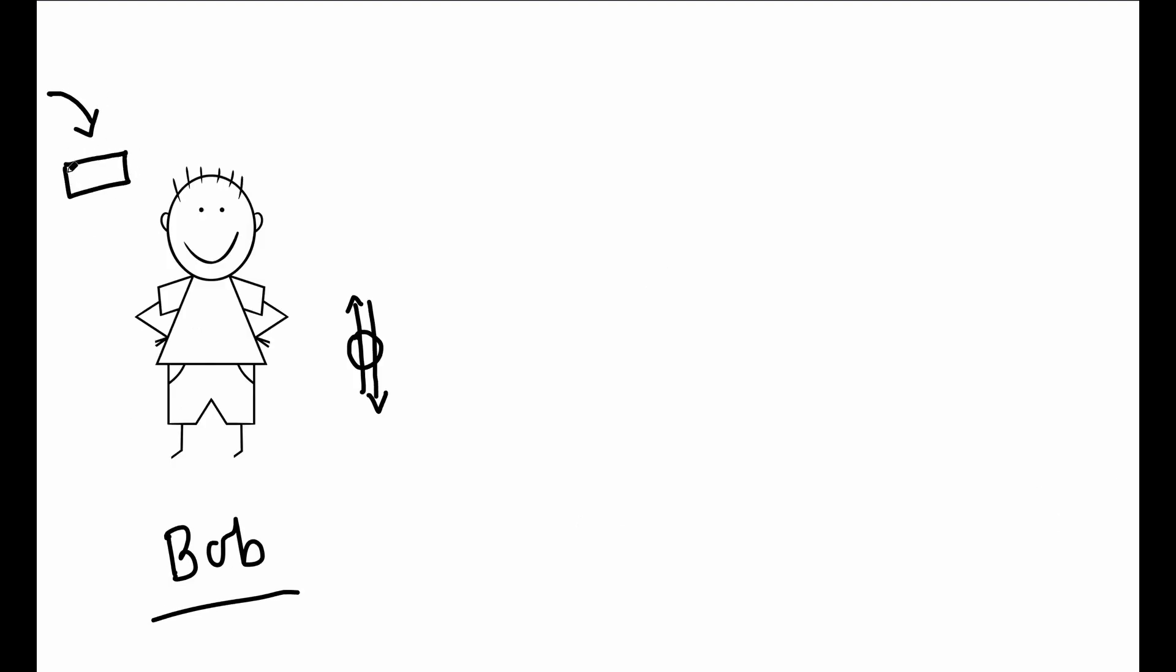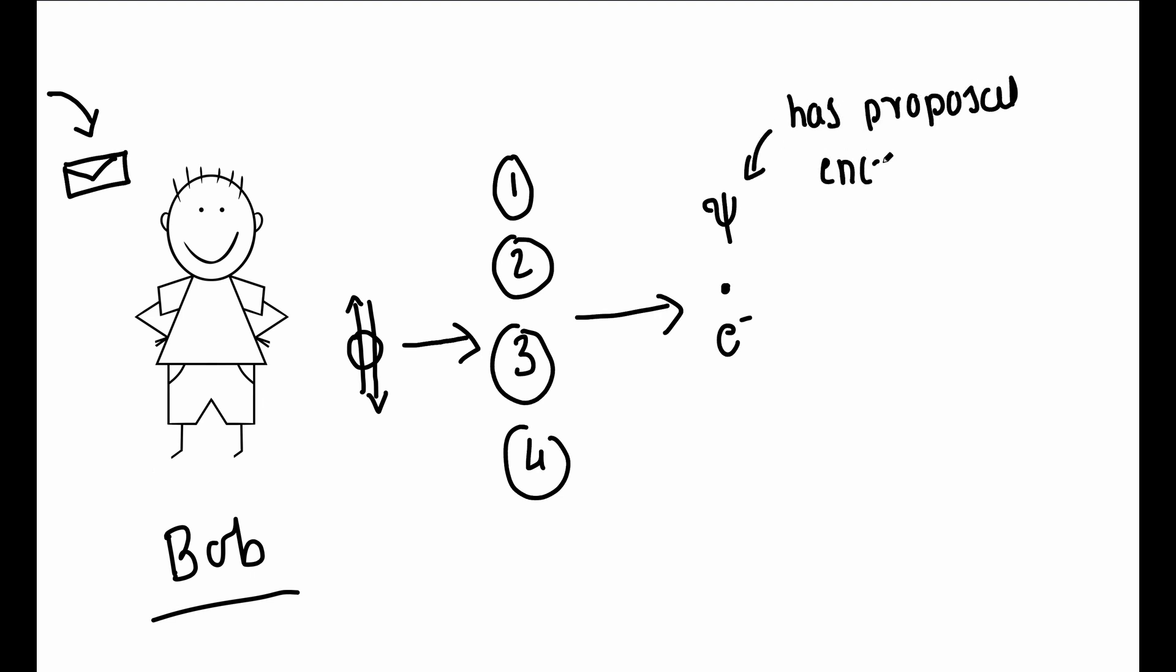Depending on Alice's message, Bob performs one of four operations on his half of entangled pair. By doing so, he can recover the original quantum state psi. In short, Alice teleported the quantum state psi to Bob, which carries her secret message.